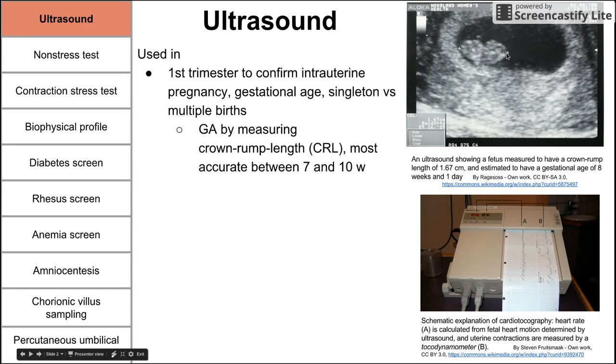You can see a sample measurement for crown-rump length that estimates the gestational age of that fetus to be 8 weeks and 1 day. This measurement for gestational age is most accurate between 7 and 10 weeks.